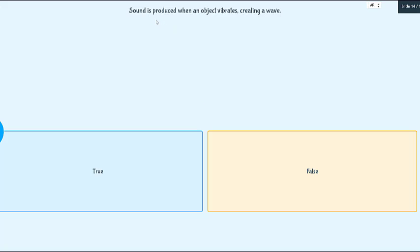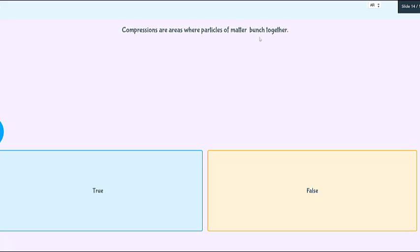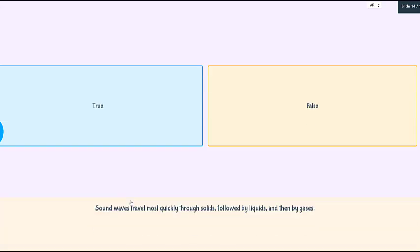This one is the last activity, about time to climb. So, sound is produced when an object vibrates, creating a wave. Is it true or false? Yes, it is true. Let's see. Compressions are areas where particles of matter bunched together. Yes, true.